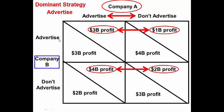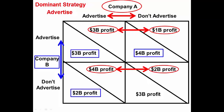Now let's look at Company B. We'll put a rectangle around it and, since it runs down the left side, we'll look at the numbers in the lower left-hand corner of each box in the matrix, putting a rectangle around each of those values.